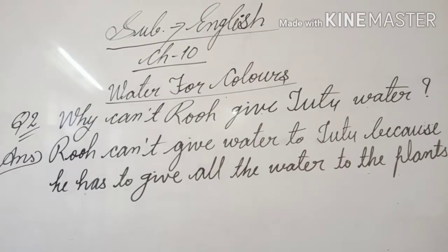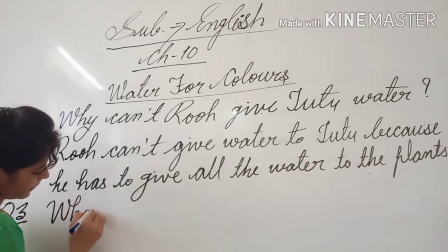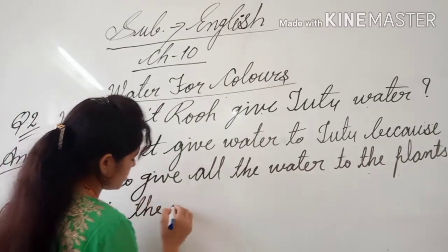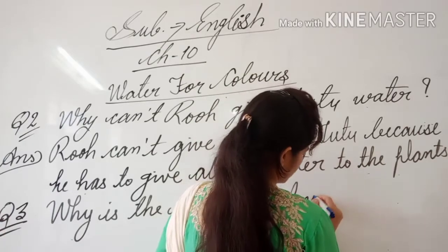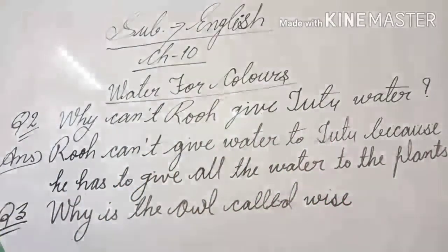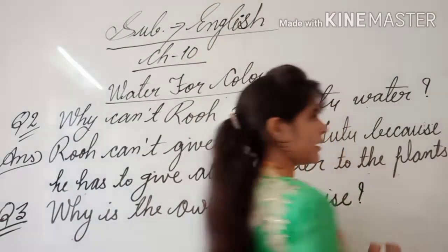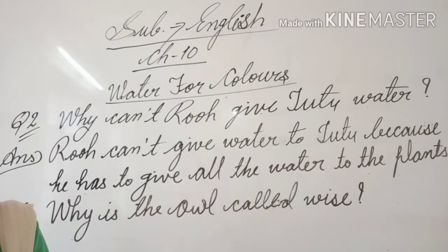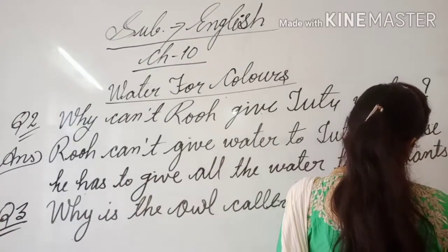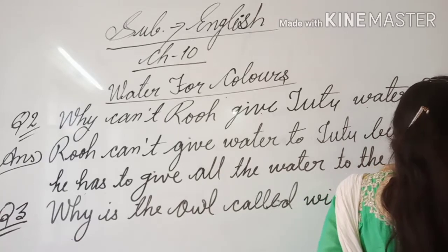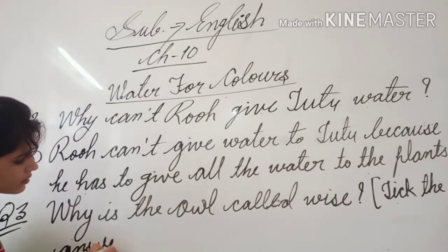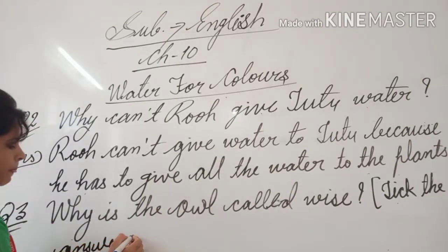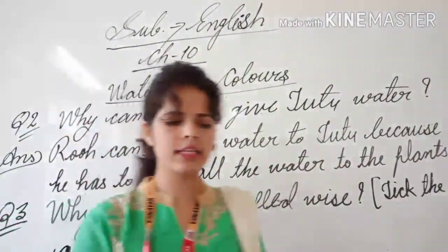Question number 3: Why is the owl called wise? We can say the owl is intelligent. Why is the owl called wise? There are two options. Which one is the correct answer? Same format as question number one.